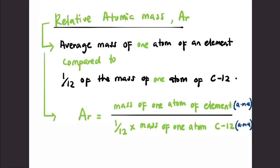The unit is amu, or atomic mass unit. Since amu appears in both the numerator and denominator, we can cancel them out, making Ar unitless - it has no unit.